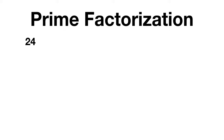We start by splitting 24 up into two factors. We could do 3 times 8. Now 3 is a prime number, so we're not going to use that one anymore, but 8 can be split up again.